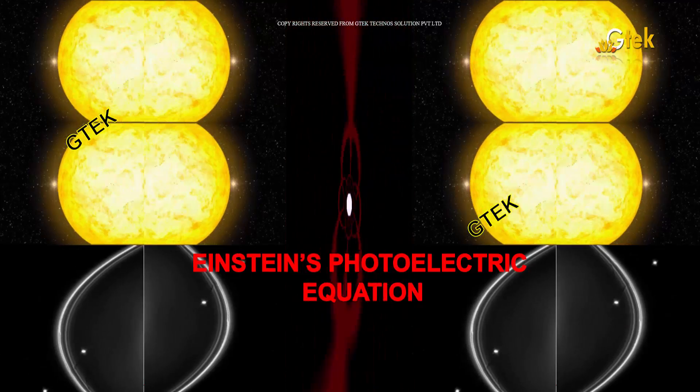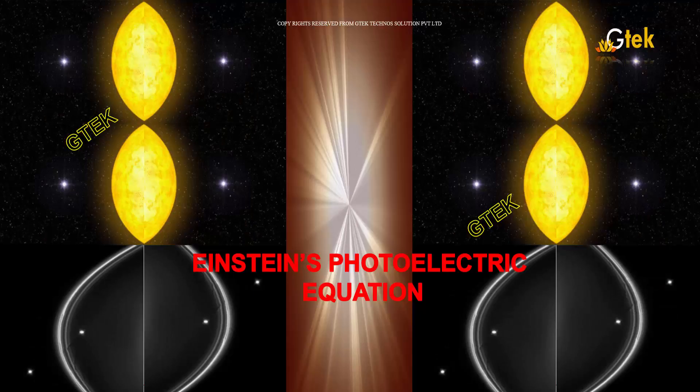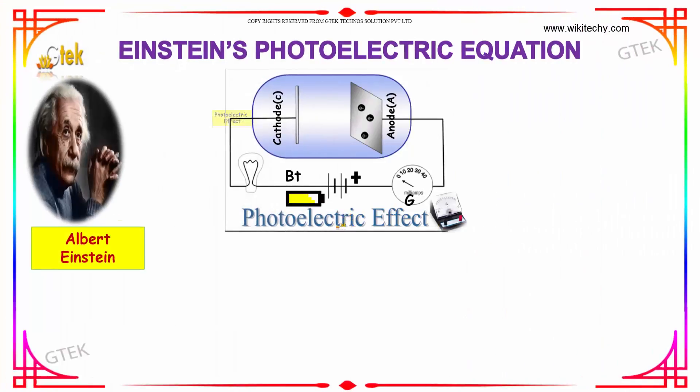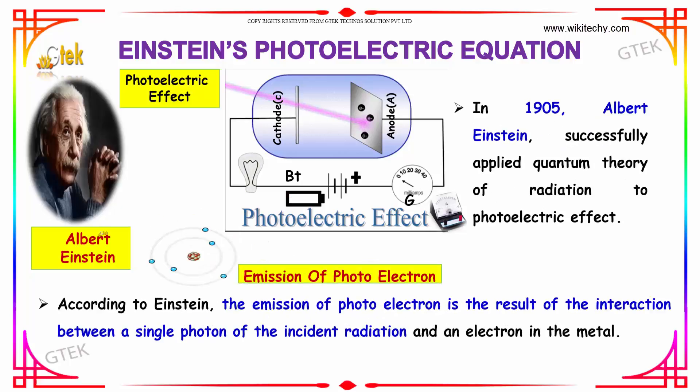Now let's talk about Einstein's photoelectric equation. Here is Albert Einstein. In 1905, Albert Einstein successfully applied the quantum theory of radiation to photoelectric effect.